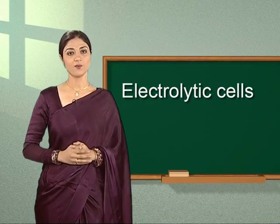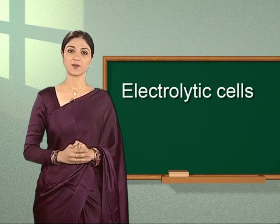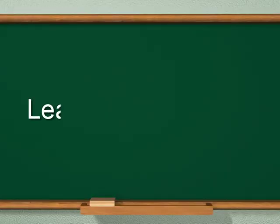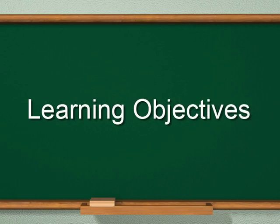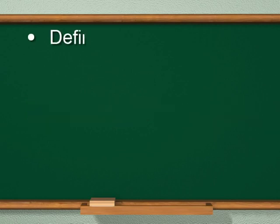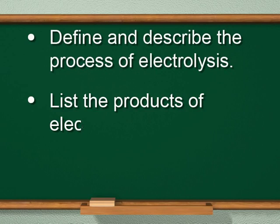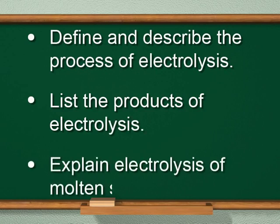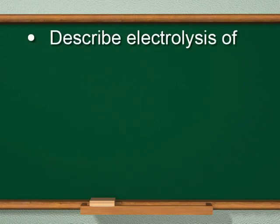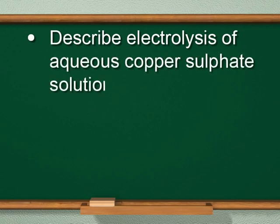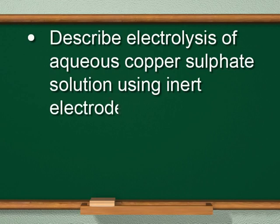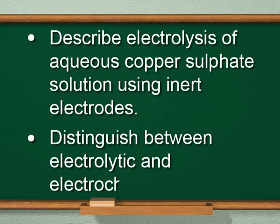Dear children, let us know the next topic and learning objectives. On completion of this topic, learners will be able to define and describe the process of electrolysis, list the products of electrolysis, explain electrolysis of molten sodium chloride, describe electrolysis of aqueous copper sulfate solution using inert electrodes, and distinguish between electrolytic and electrochemical cells.